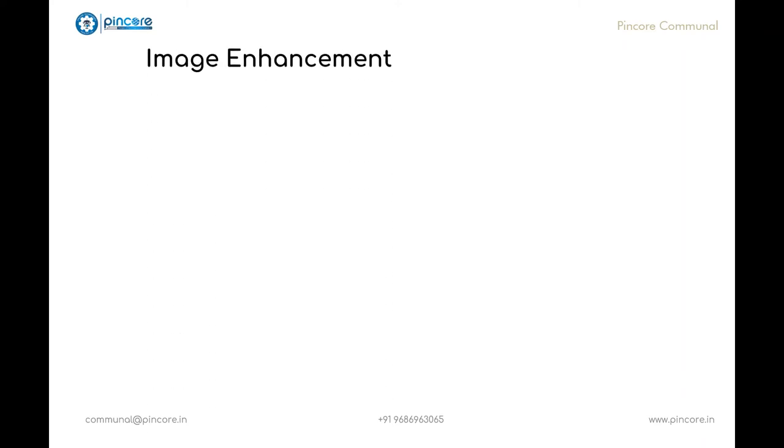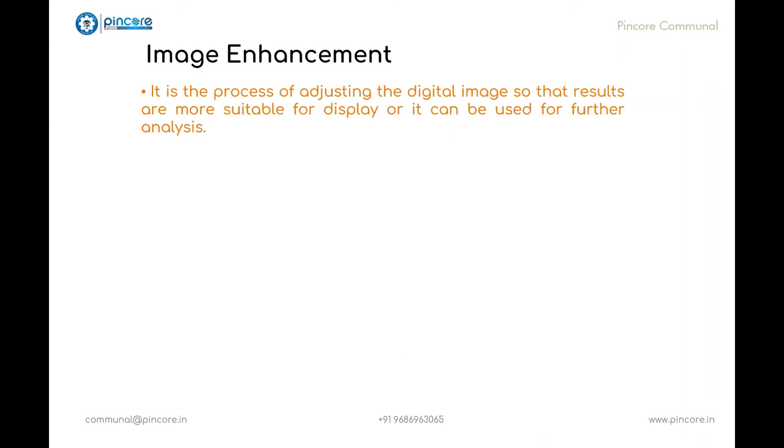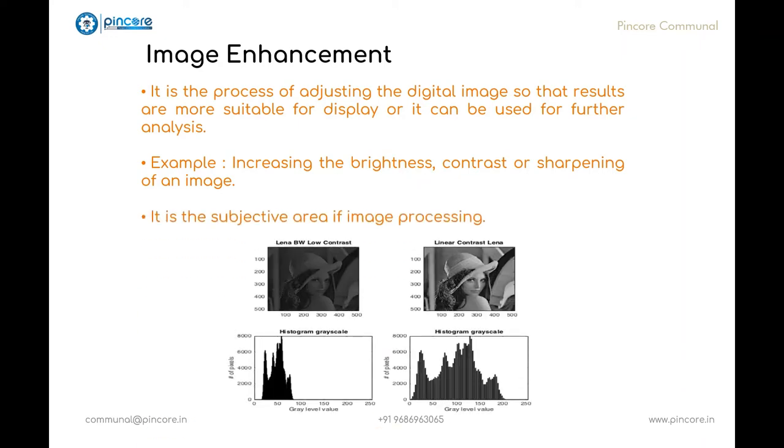Now let us look into the next step, that is image enhancement, which is the most simplest and appealing step in digital image processing. Image enhancement is the process of adjusting the digital image so that results are more suitable for display or it can be used for further analysis. The primary idea behind enhancement technique is to bring out the details that are obscured or simply to highlight certain features of an image. For example, increasing the brightness, contrast, or sharpening adjustment or noise removal in an image to make it look more pleasing. It is subjective area of image processing which means that some people like natural color but some people prefer high saturation images. Hence image enhancement is subjective in nature which differs from person to person.